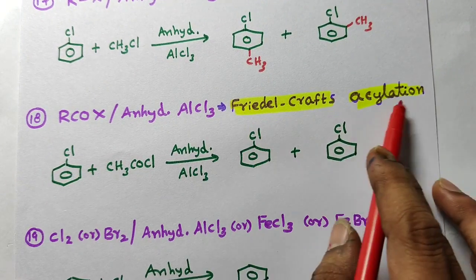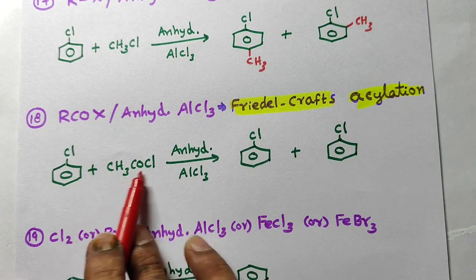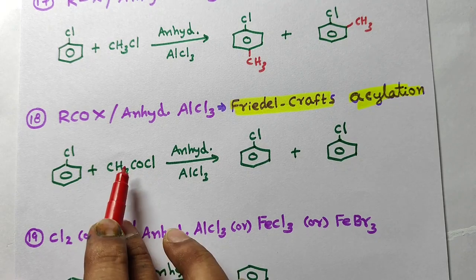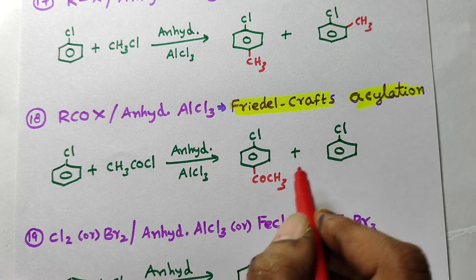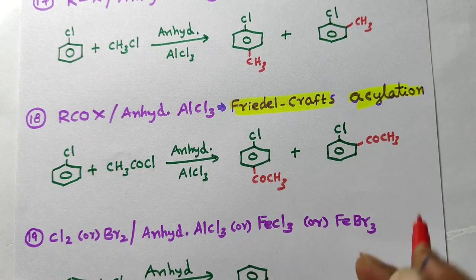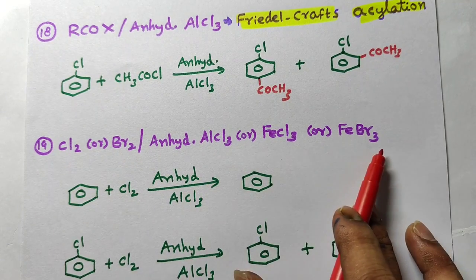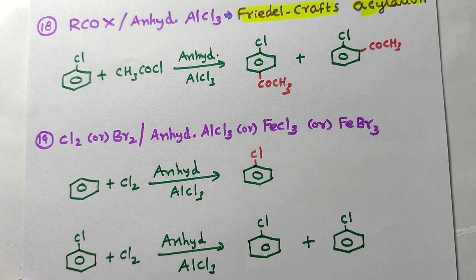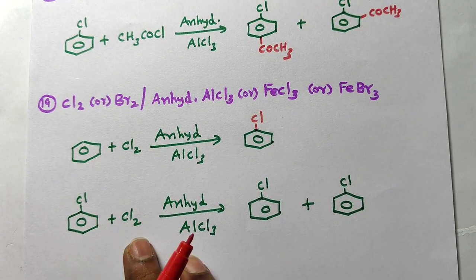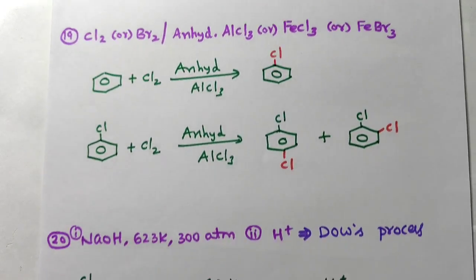Next: Friedel-Crafts acylation reaction — acyl halide in the presence of anhydrous AlCl3. For example, acetyl chloride: CH3CO⁺ is the electrophile, which attacks at the para position to give para-COCH3 product, and ortho position for the minor product. Also, chlorine or bromine in the presence of anhydrous AlCl3 or any Lewis acid gives electrophilic aromatic halogenation — Cl⁺ is the electrophile, giving chlorobenzene. Further halogenation of chlorobenzene gives para-dichlorobenzene (major) and ortho-dichlorobenzene (minor).